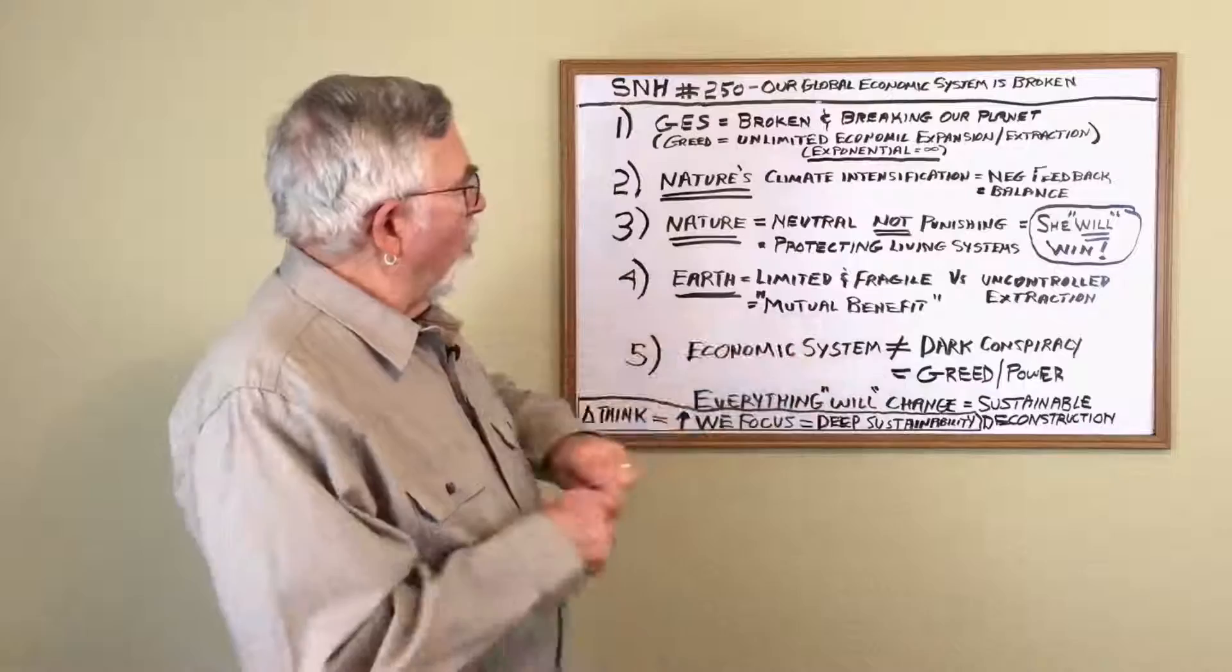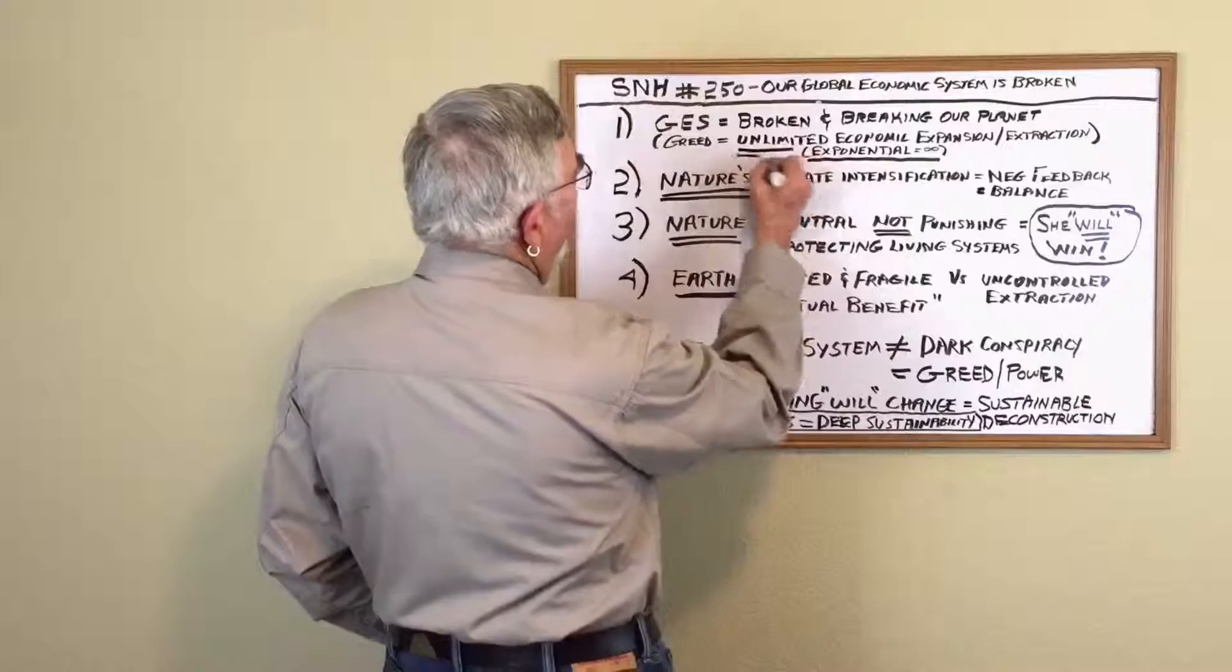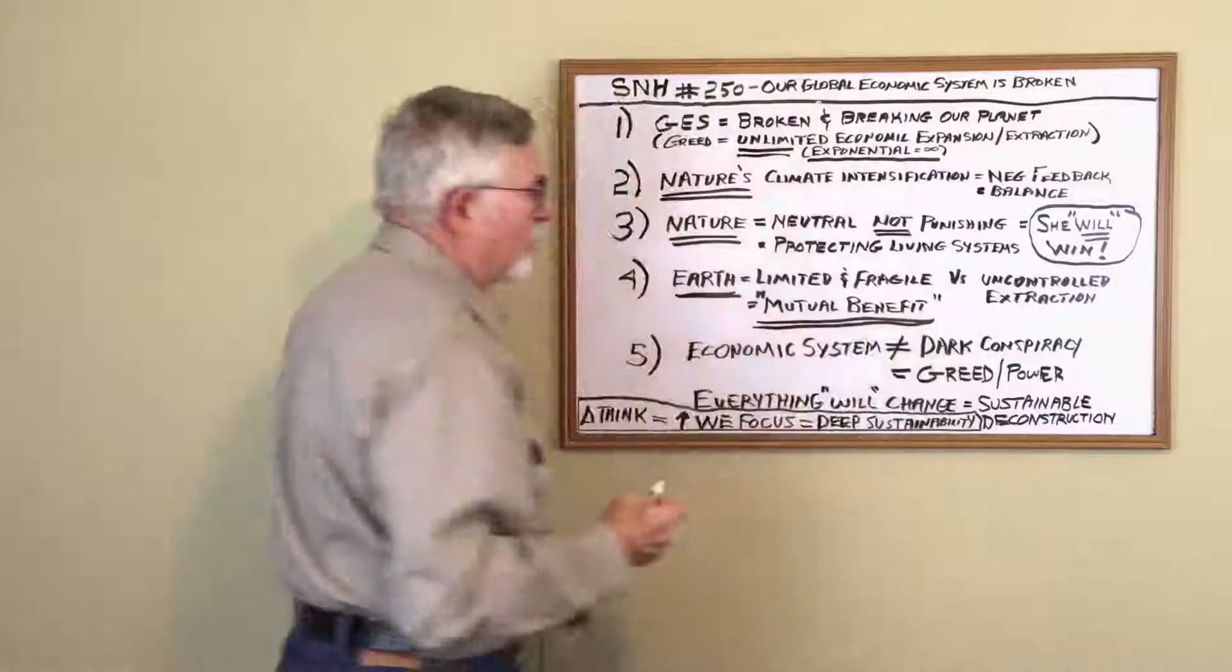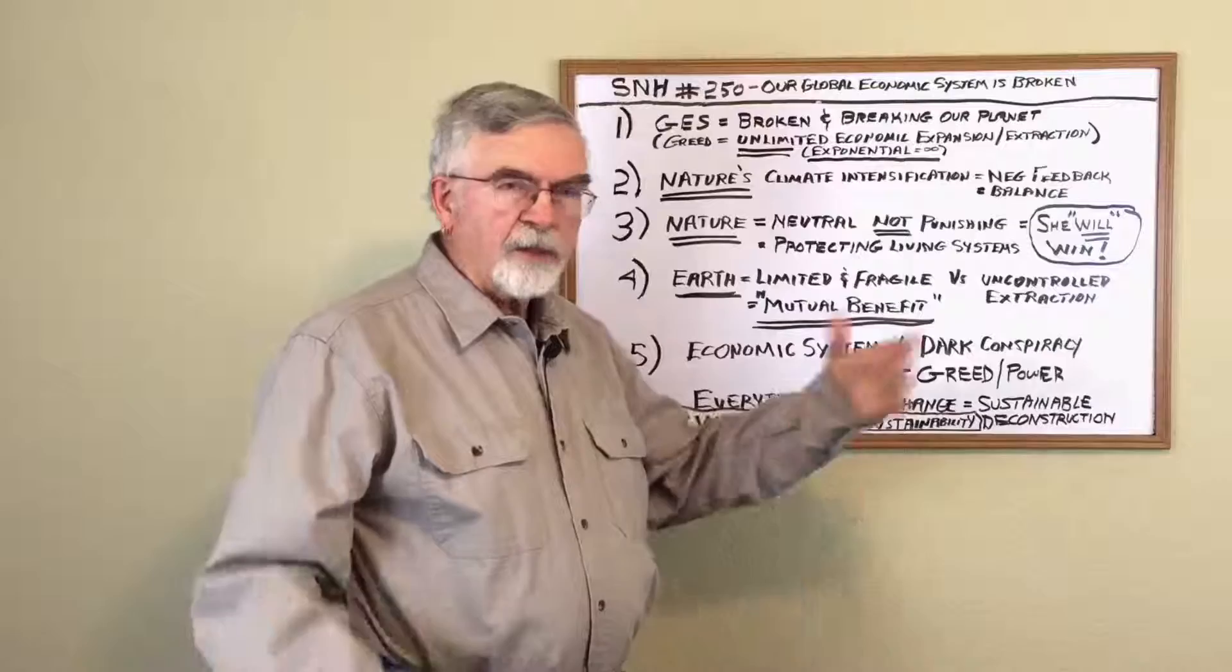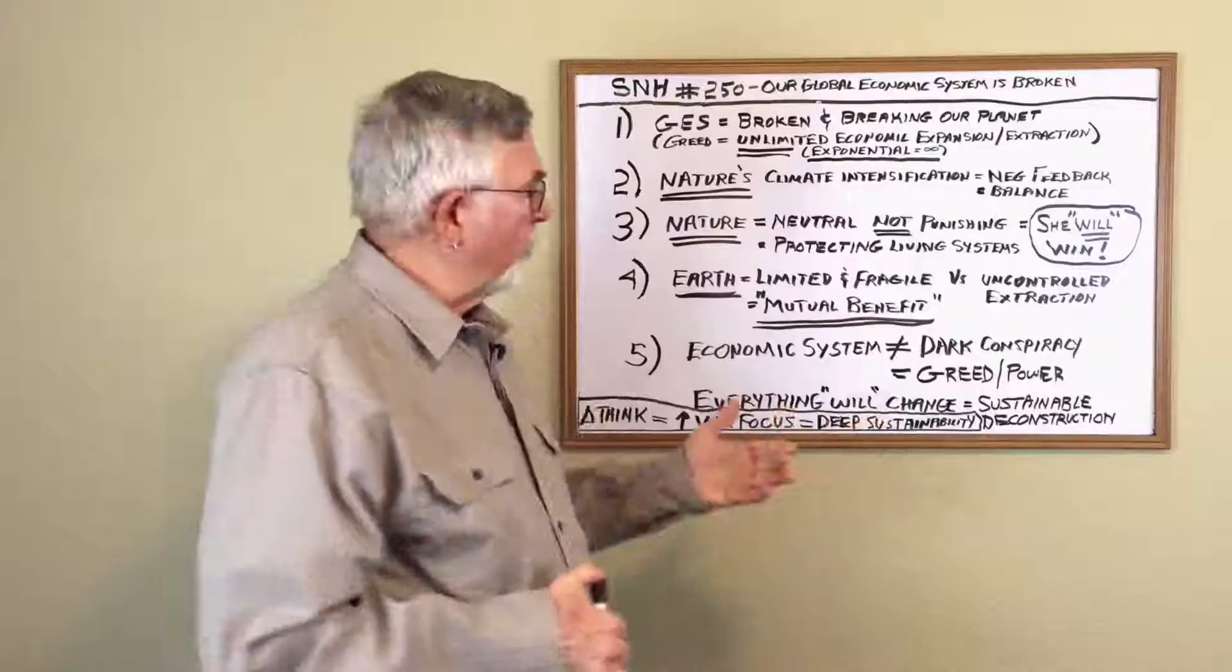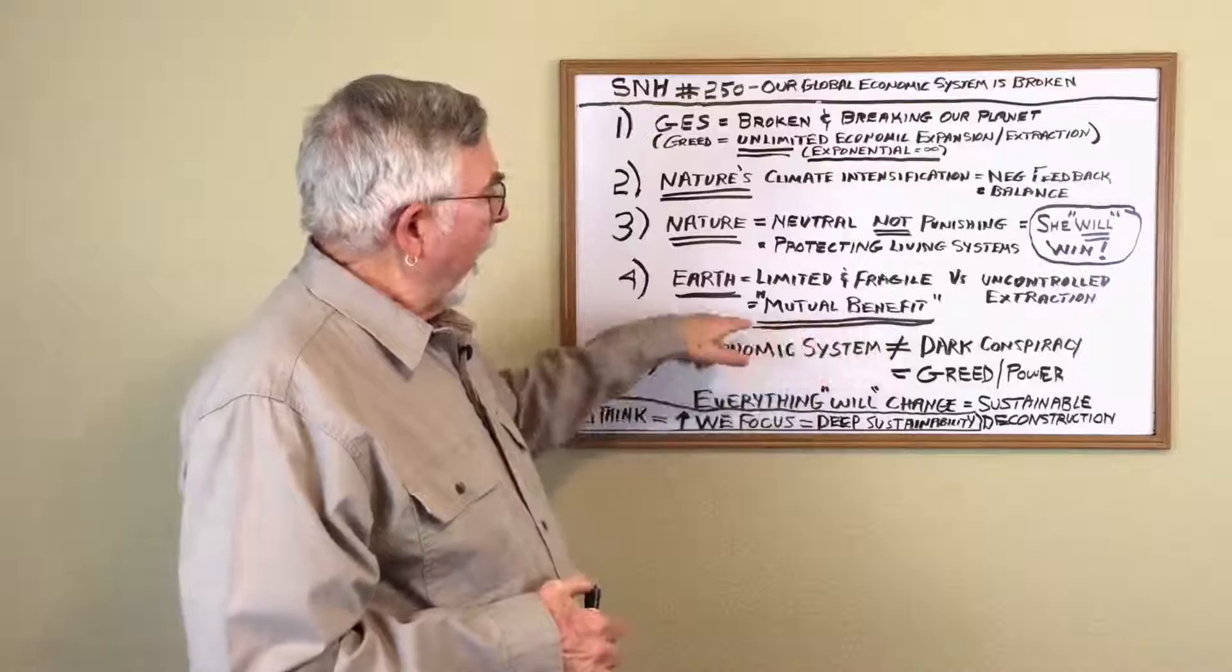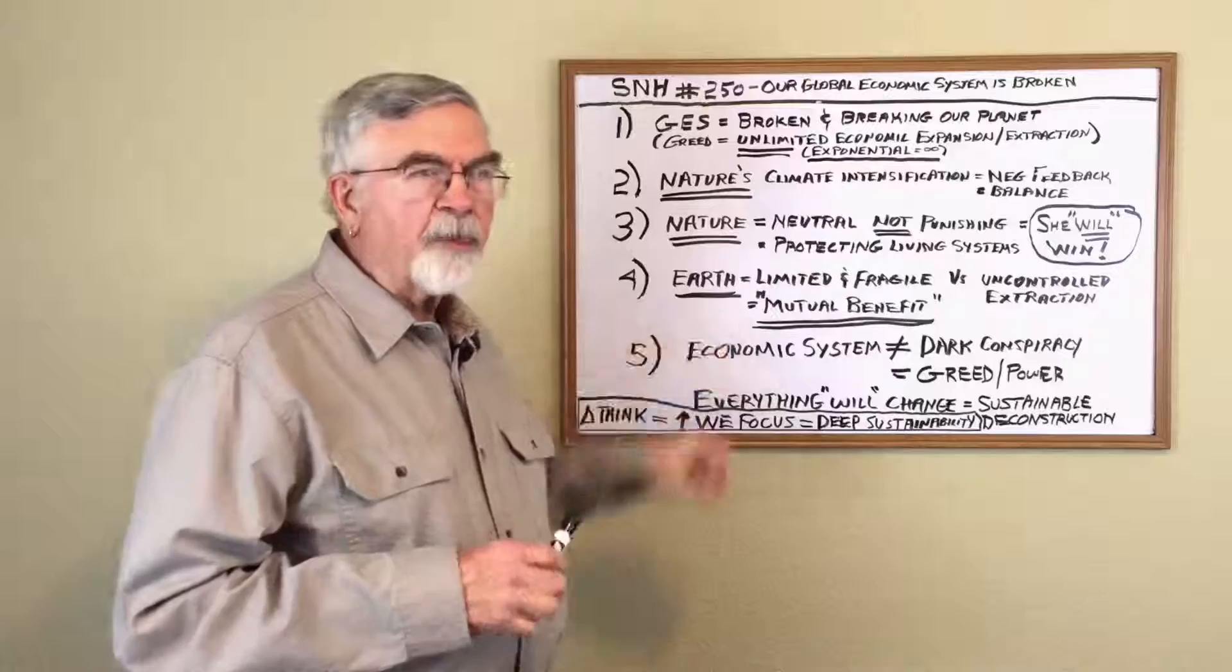And what we have to do is stop this unlimited economic expansion and begin to talk about how do we use all of this stuff that we're taking out of the earth in a balanced way. In other words, having the real costs for extracting all this stuff included in the commodities that we build from all this extractive material. And then how do we use it for mutual benefit?